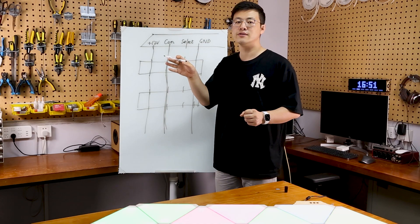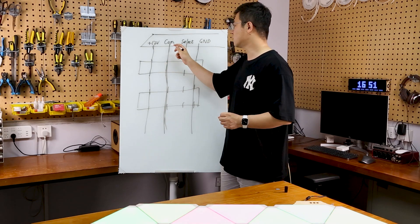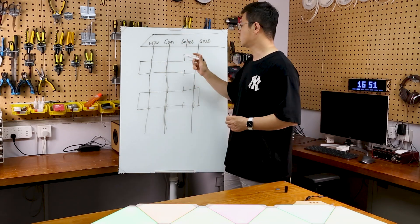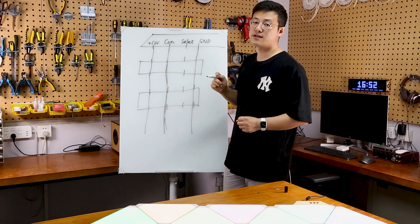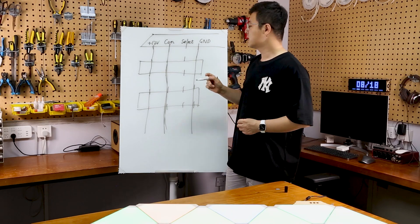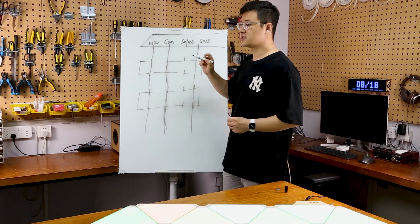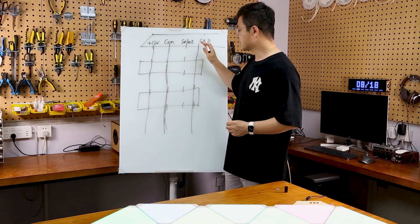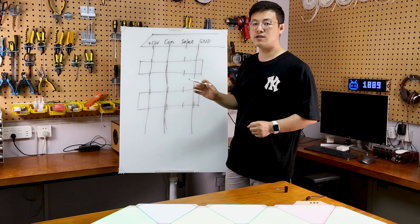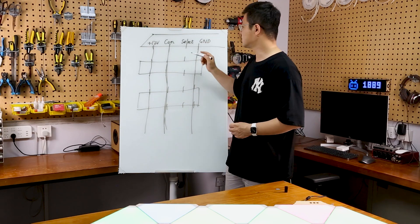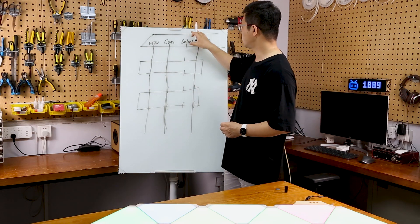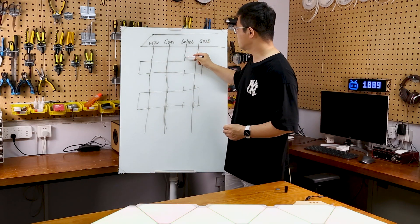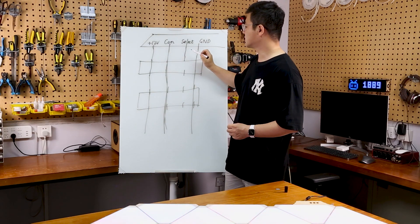那具体怎么样才能更好地去找到一个具体的漆光板呢？只通过这一个接角做不到。那这个时候就有了select的接角。select的接角和其他的三个接角就完全不一样了，它在漆光板上是一个串联的形式。那首先我们的主控连到第1个漆光板上。